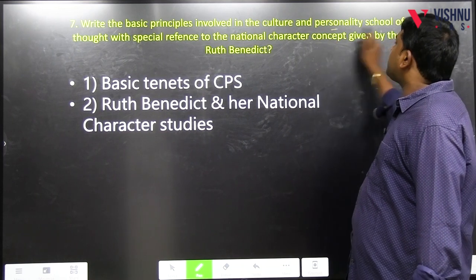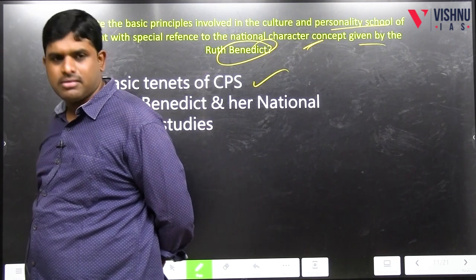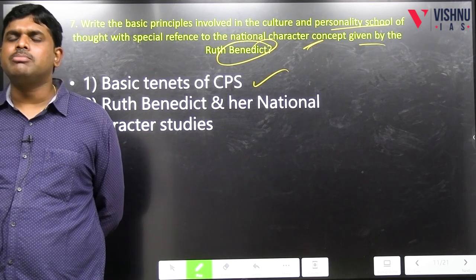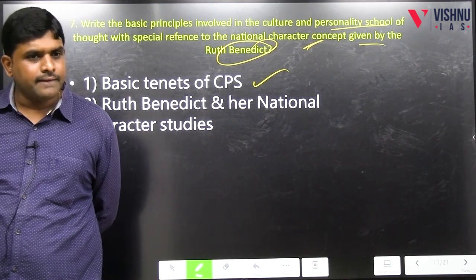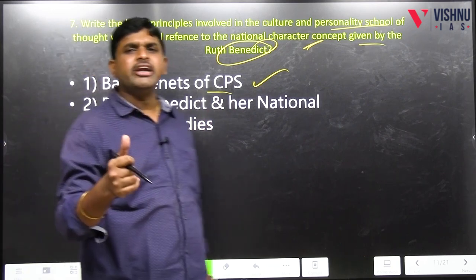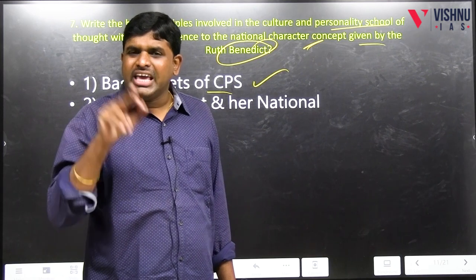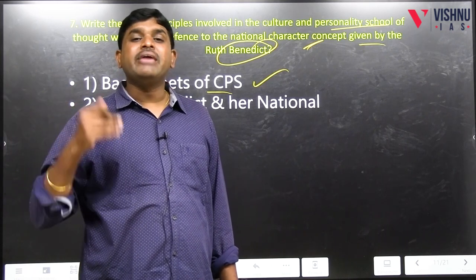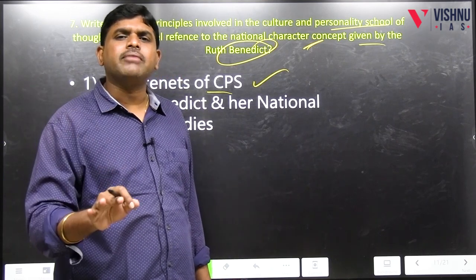Write the basic principles involved in culture personality school of thought with special reference to national character concepts given by Ruth Benedict. Culture personality school is also called the psychological school of America. Its origin happened in the genesis of the Second World War — Ruth Benedict and Margaret Mead were responsible for it. We can also credit Franz Boas, as he was the first person who maintained the relationship between culture and personality. Memory tip: Ruth Benedict — B means P influenced C (personality influenced culture). With time, B became M — Margaret Mead — and PC became CP: culture influenced personality.